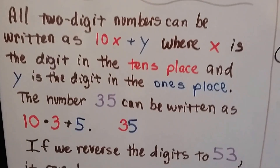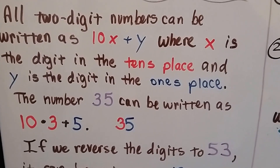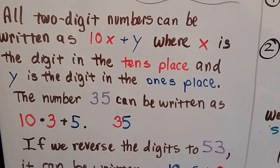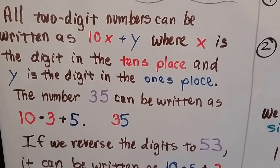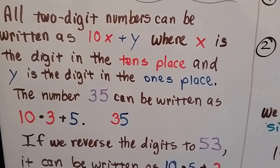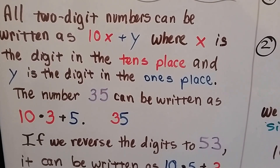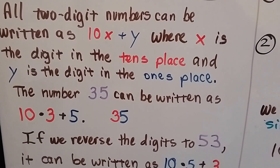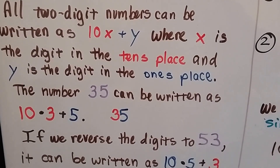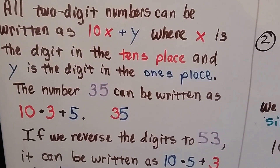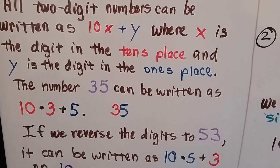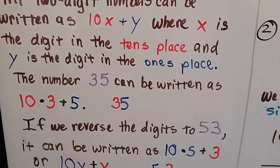All two-digit numbers can be written as 10x plus y, where x is the digit in the tens place, and y is the digit in the ones place. So the number 35 can be written as 10 times 3 for the tens place, plus 5 for the ones place. We get 35.